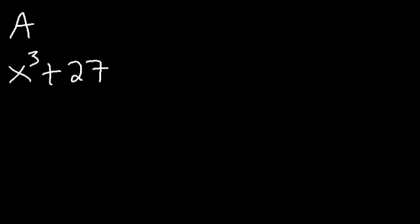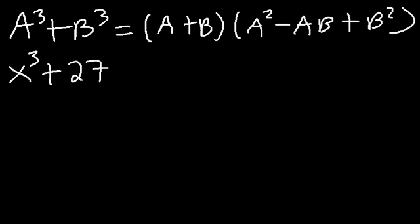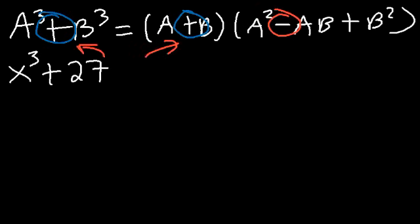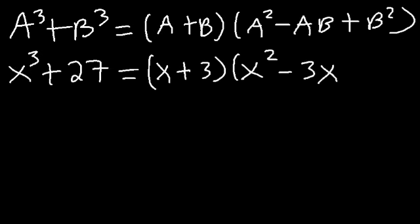Now let's factor x cubed plus 27. The formula is a³ plus b³ equals (a plus b)(a² minus ab plus b²). Note the signs: these two match the original sign, and this one is opposite to the first. The cube root of x³ is x and the cube root of 27 is 3. So a squared is x², ab is 3x, and b squared is 9. The answer is (x plus 3)(x² minus 3x plus 9).